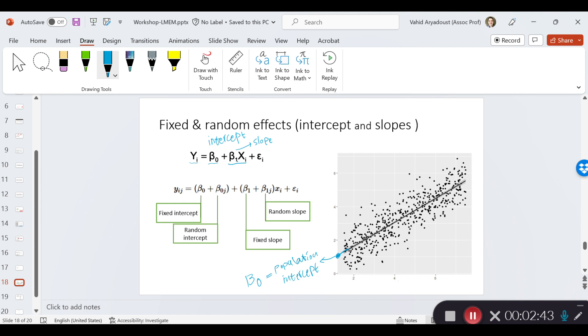In addition, we have a slope that is how fast the line increases or the line goes up, and the slope right here is basically the population slope in a regression model and nothing more.